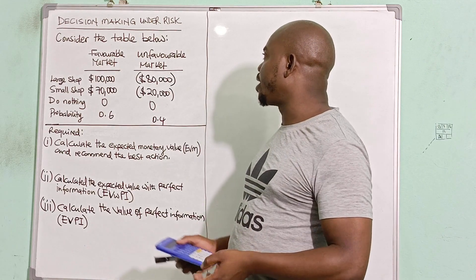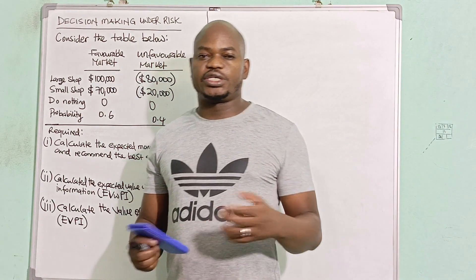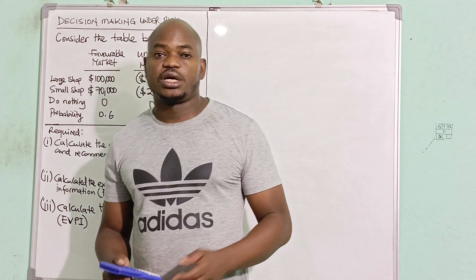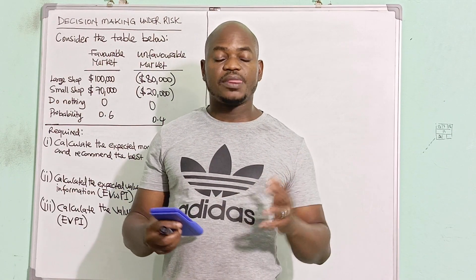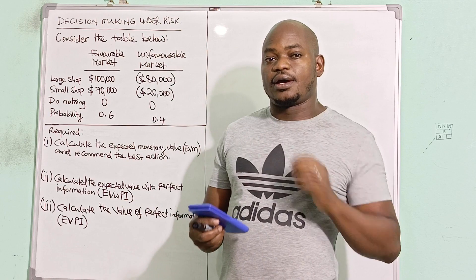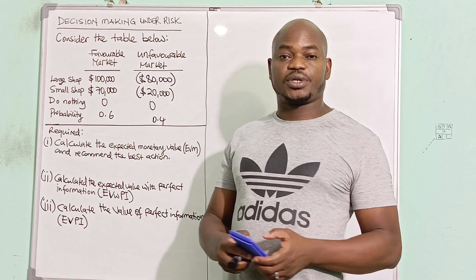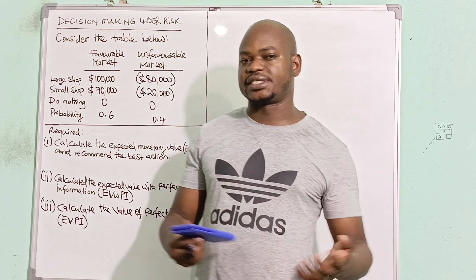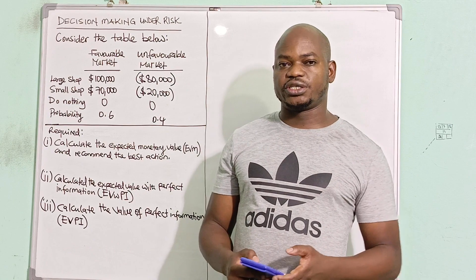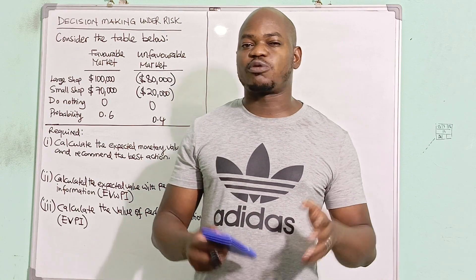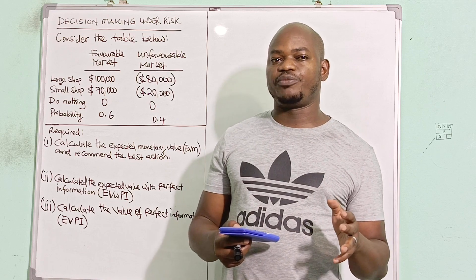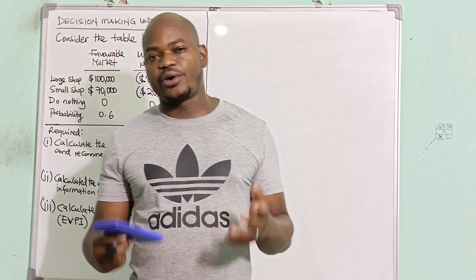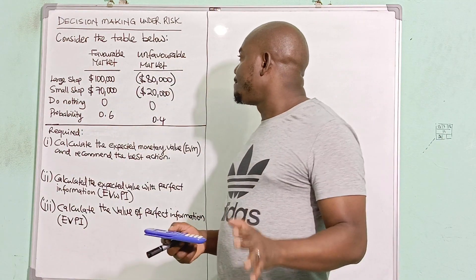Decision-making under risk is different from decision-making under uncertain conditions. In another video I explained how we calculate the optimal decision that a decision maker or investor would arrive at using uncertain conditions. Under uncertain conditions there are several options but no probabilities attached to the occurrences of those events or actions.